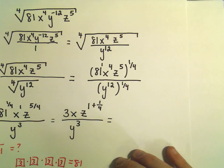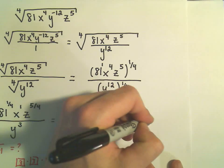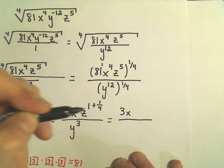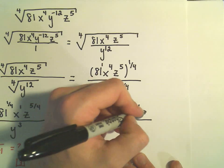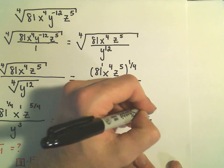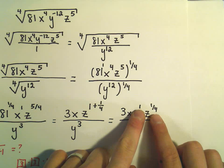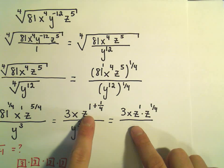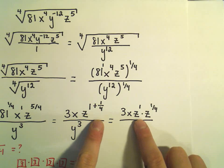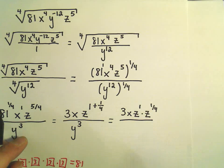I think once you get used to these, you can certainly skip a couple of these steps. So I would have three x z to the first, times z to the one-fourth. Because remember, if I multiply like bases, I add the exponents. So breaking up z to the one-plus-a-fourth as z times z to the one-fourth is equivalent.